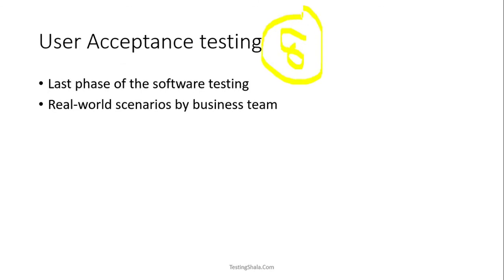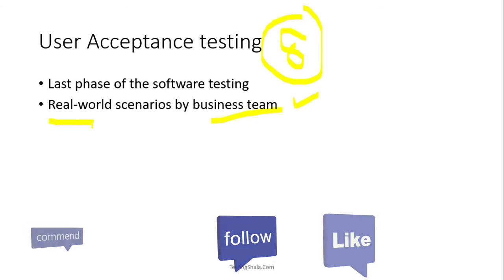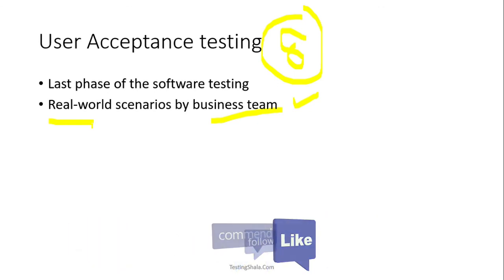The eighth and last type is user acceptance testing (UAT). This is the last phase of software testing, performed by business users from the client side who will actually use the software. They validate real-world scenarios and practical use cases. UAT is very crucial — until the business team signs off, the entire testing cycle is not complete.